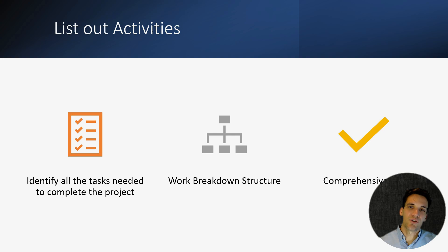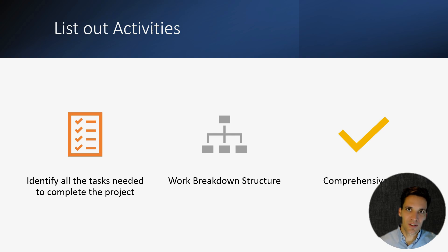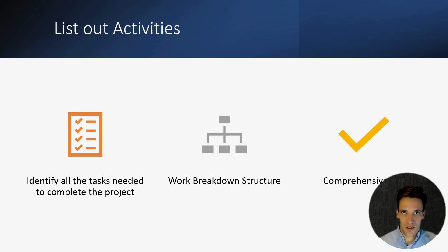The first thing we're going to do is list out all the activities we need to complete the project scope. This step is so important because you need to define every activity that needs to be completed. If you're missing activities, your schedule isn't going to be correct.